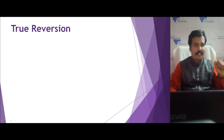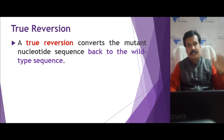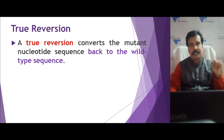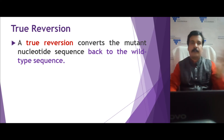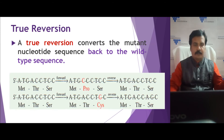First, let us understand true reversion. In true reversion, the second mutation occurs at the same location as the forward mutation, and the mutant sequence reverts back to the wild type sequence. This is called true reversion. As shown in the figure, consider methionine, threonine, and serine.